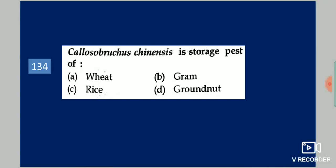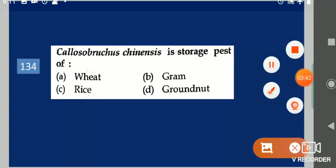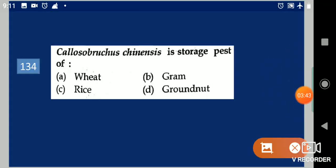Next question: Callosobruchus chinensis is a storage pest of dash. Your options are: wheat, gram, rice, groundnut. Your answer is gram.